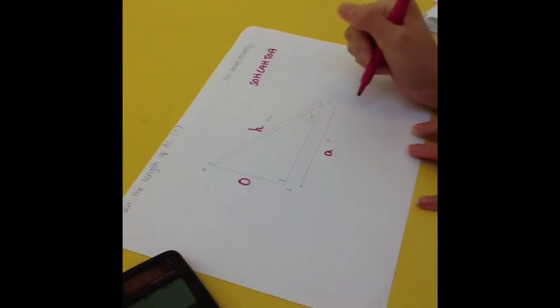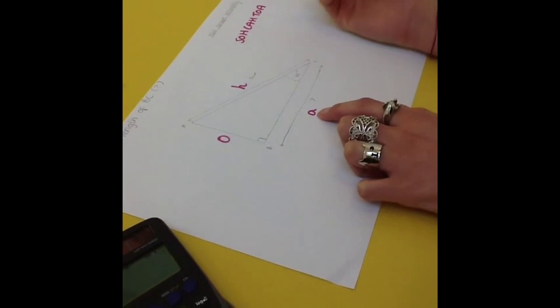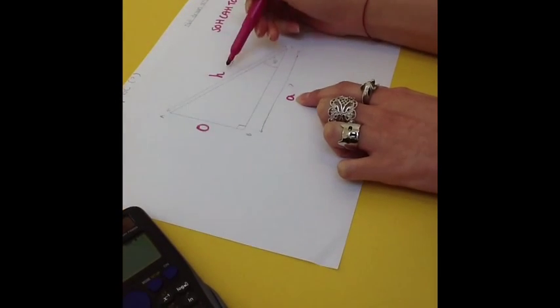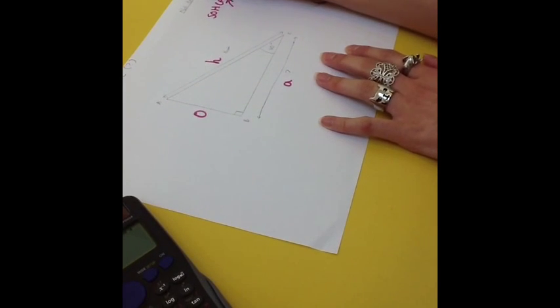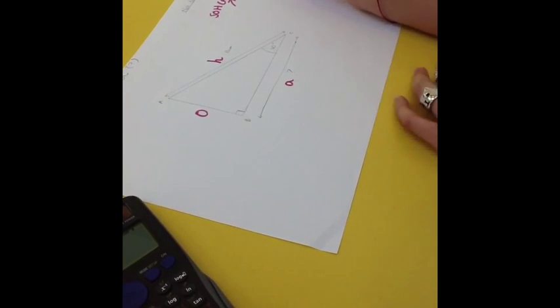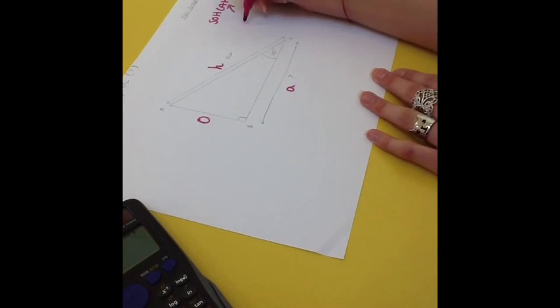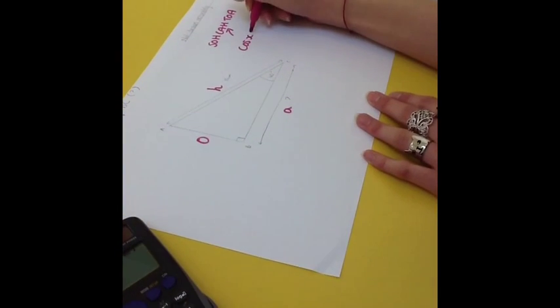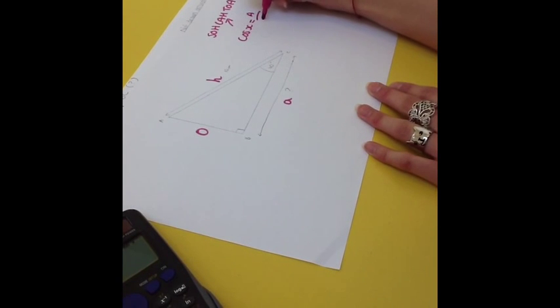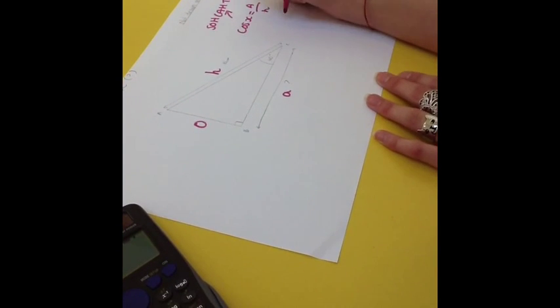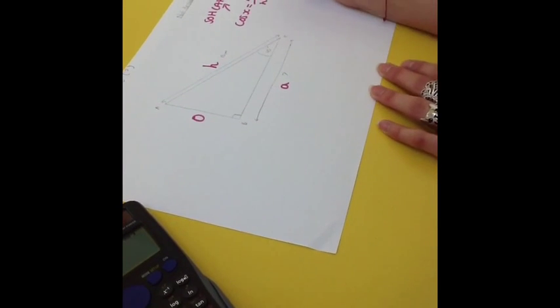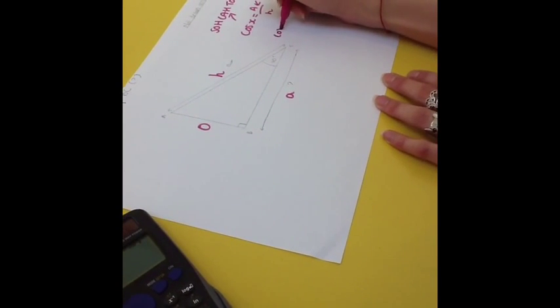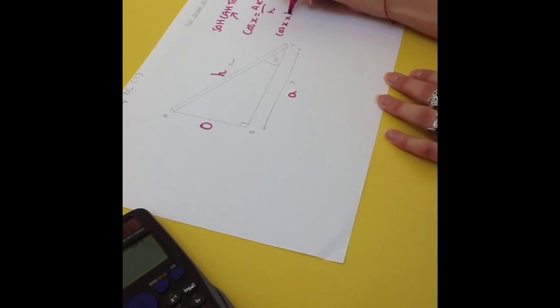Okay, now look what you need to find. We need to find the adjacent, and we've been given an angle and the hypotenuse. So, what rule is that? Cosine. The CAH part. So, write that out as well. Cos x equals a over h. Now, remember, you have to rearrange the formula if you're going to find that. So, it would be cos x times h equals a.